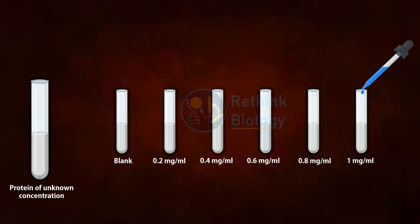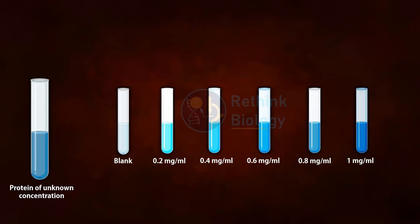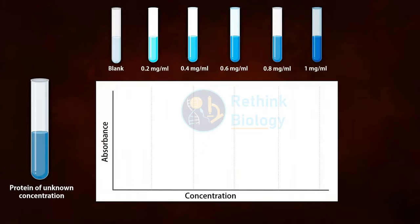The protein will give color after reacting with the reagents. The color intensity is directly proportional to the protein concentration. Now you have to measure the absorbance of each known concentration of protein along with your unknown sample. When you plot those readings on a graph, it will give you a standard curve.